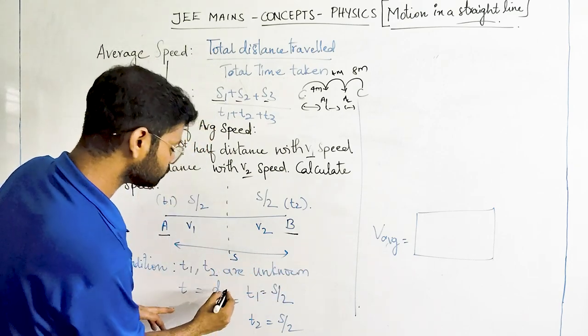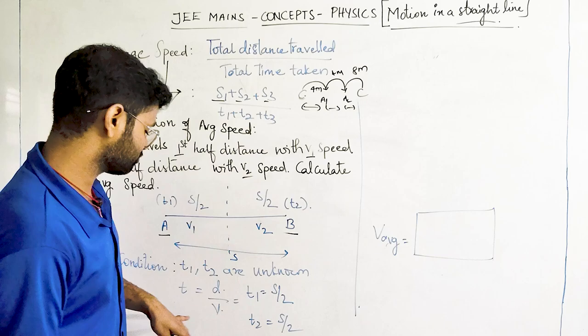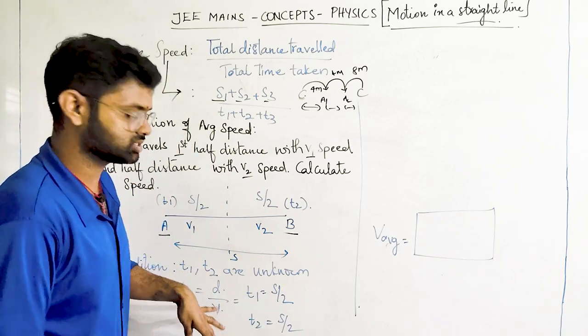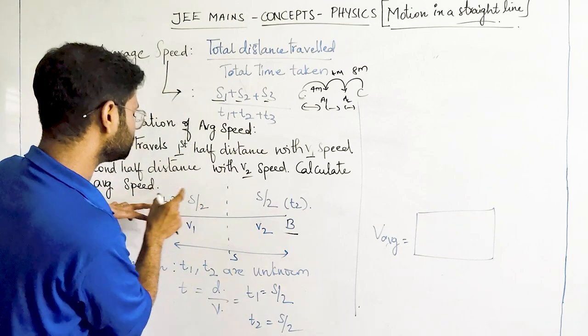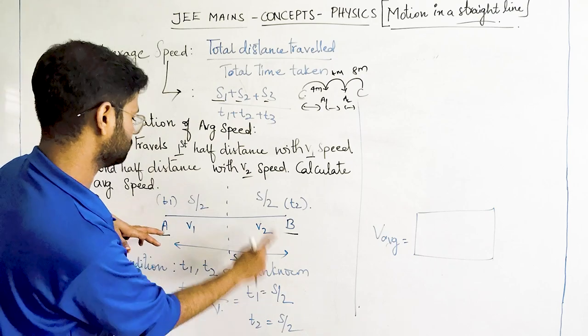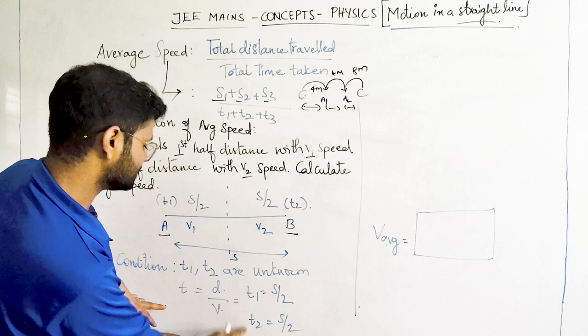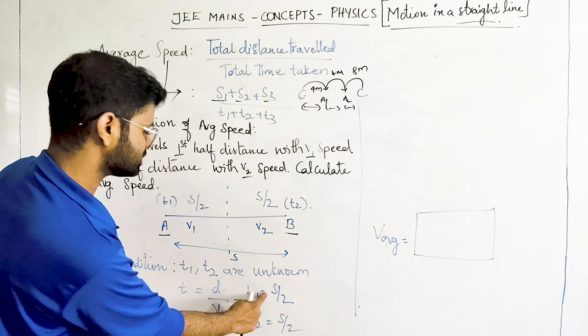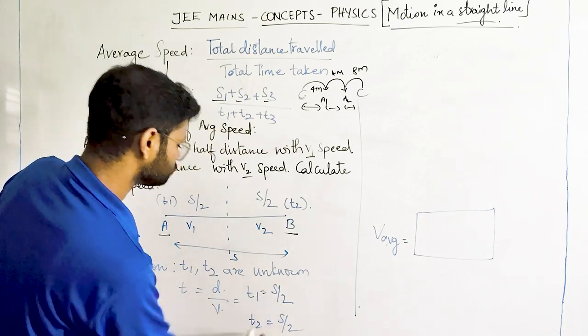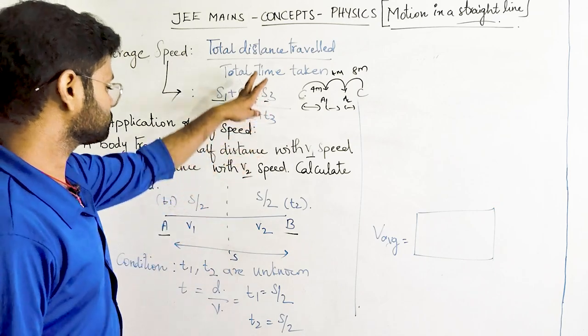We know that T is equal to D upon V. So from this, for the first scenario T1 what is the distance? Distance is S by 2. For T2 distance is S by 2. So if I substitute here what happens? So S by 2 upon V1, S by 2 upon V2. So what is my formula?